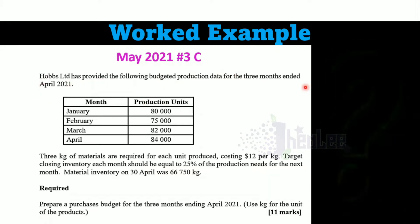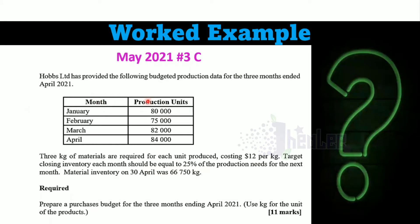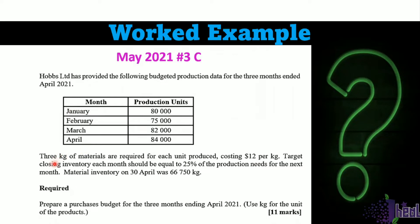The question reads: OBS Limited has provided for 2021, and you're presented with the production units for four months. Three kg of materials are required for each unit produced — this information is very important — costing $12 per kg.